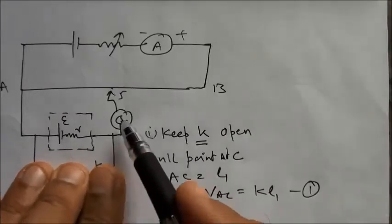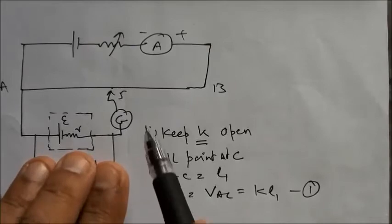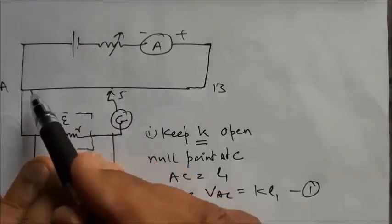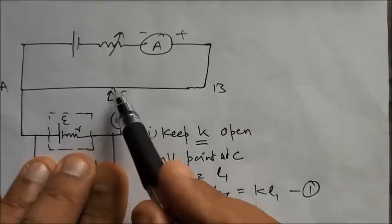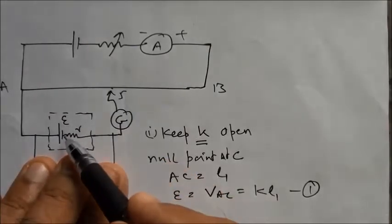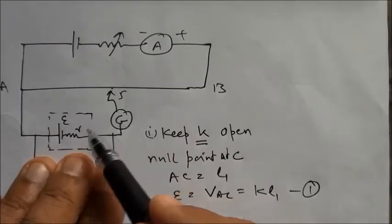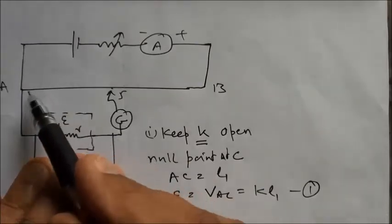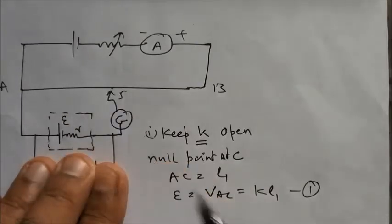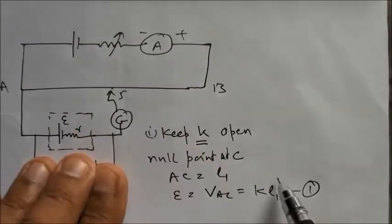With K open, we slide the jockey and find the null point, say at position C, where AC = L1. So E = KL1, just as before. No current passes through the external resistance since K is open.